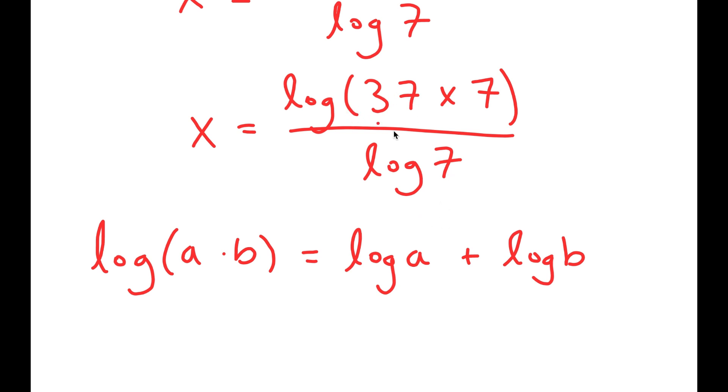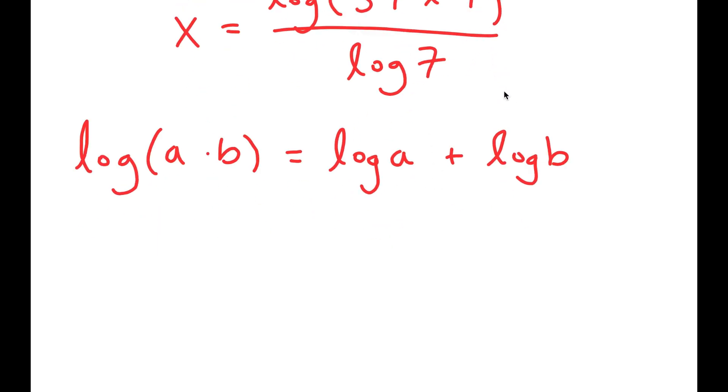So in this case, log of 37 times 7, that's going to turn into log of 37 plus log of 7 over log of 7.